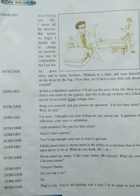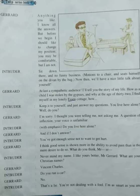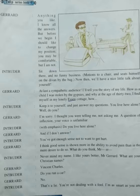Gerard says: 'Anything you like — I know all the answers. But before we begin, I should like to change my position. You may be comfortable, but I am not.' The intruder says: 'Sit down there — and no funny business,' motioning him to a chair, and sits himself on the divan by the bag. He says: 'Now then, we will have a nice little talk about yourself.' Gerard tells him he knows everything but feels uncomfortable, and the intruder allows him to sit on a chair while he sits on the divan near the bag.